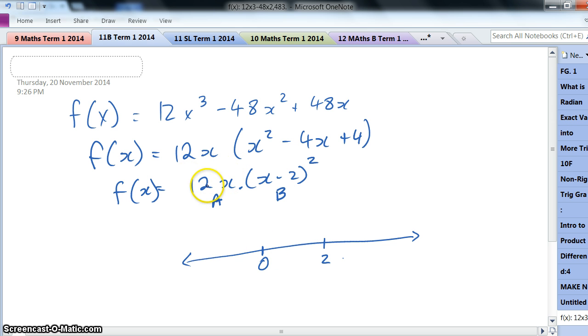When I'm less than 0, 12 times x will be less than 0, so I'll have a negative multiplied by a positive. That'll give me a negative.